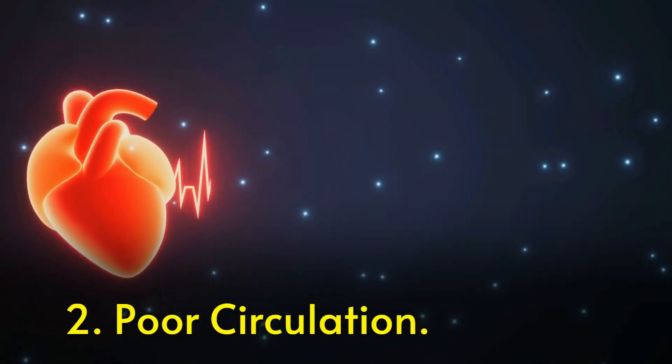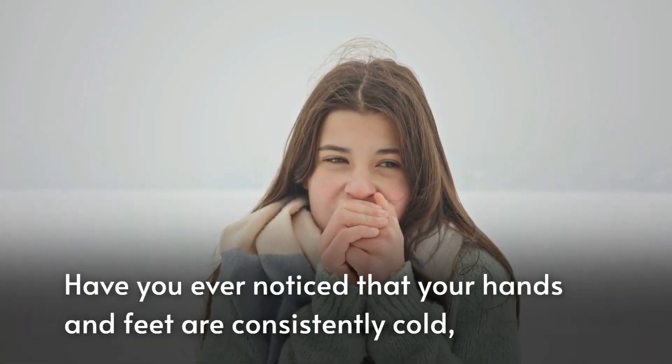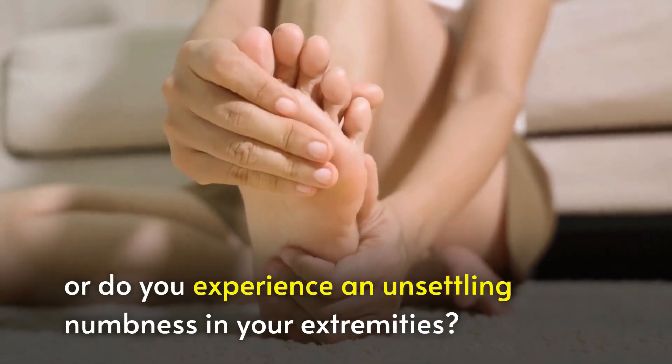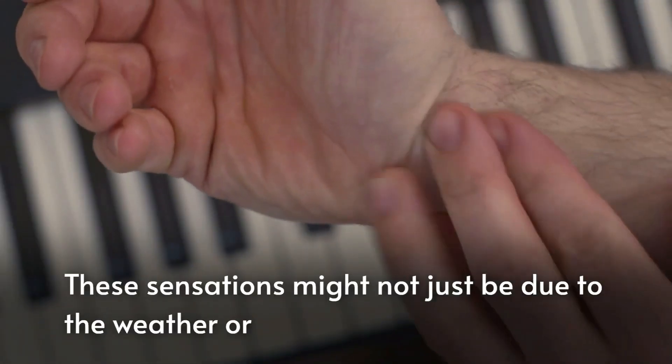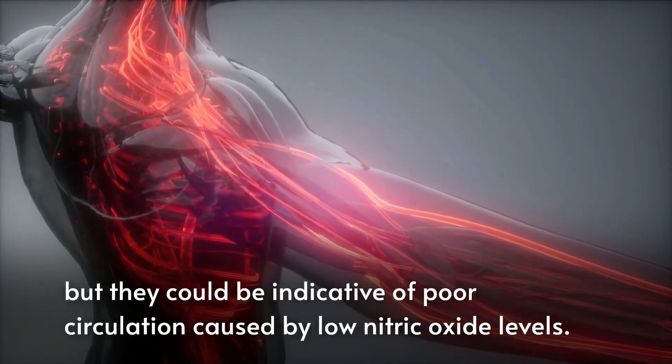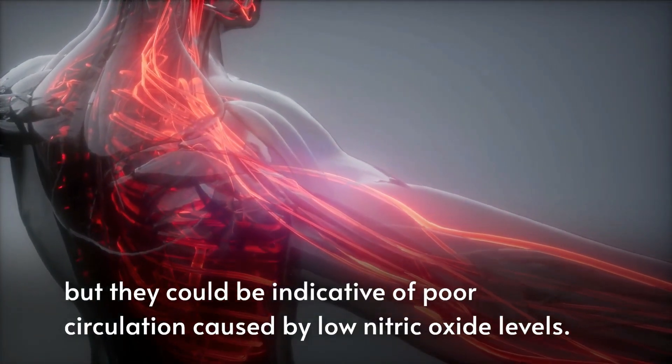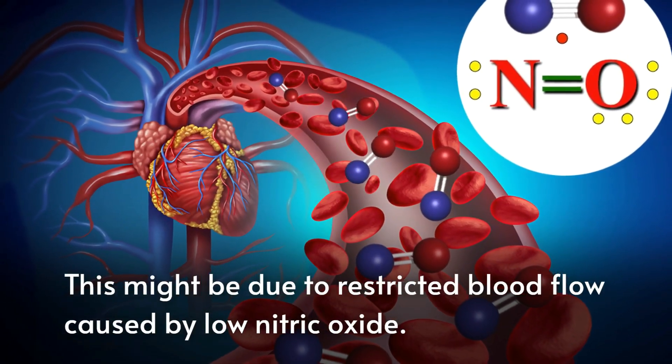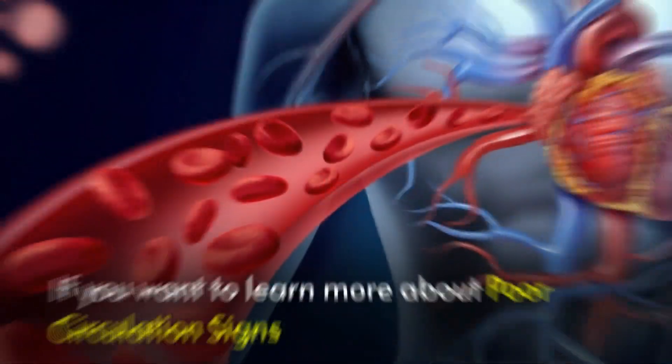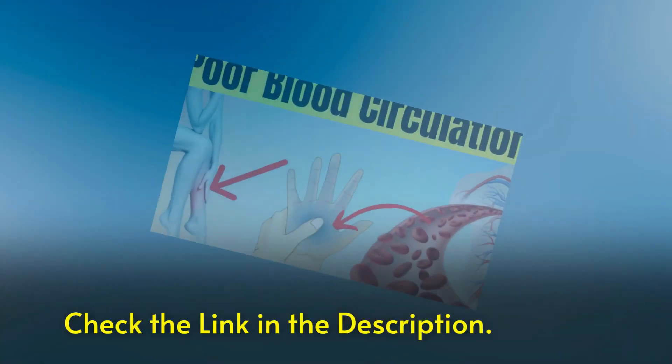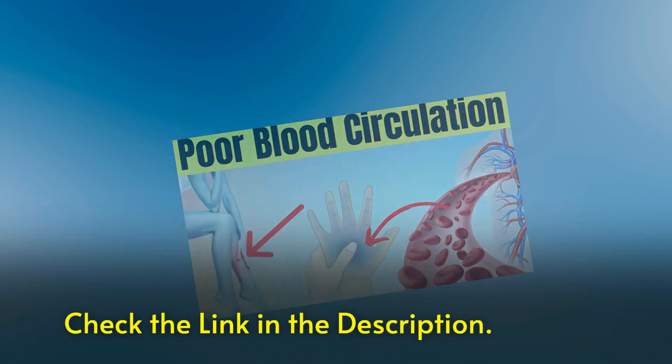The next sign is poor circulation. Have you ever noticed that your hands and feet are consistently cold, or do you experience numbness in your extremities? These sensations might not just be due to the weather or sitting in an uncomfortable position, but they could be indicative of poor circulation caused by low nitric oxide levels. This might be due to restricted blood flow. If you want to learn more about poor circulation signs, watch this video—check the link in the description.